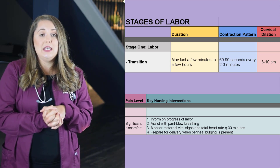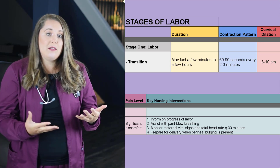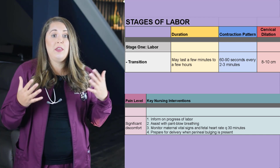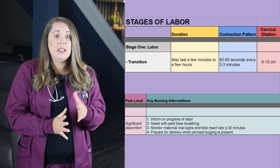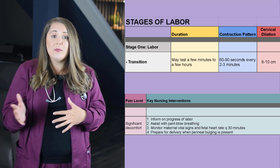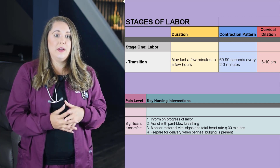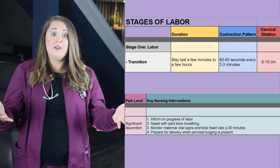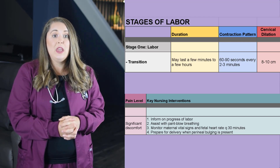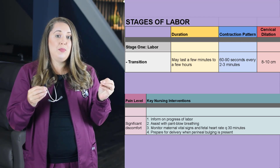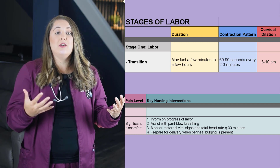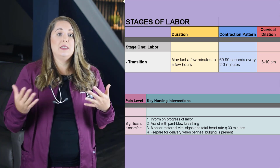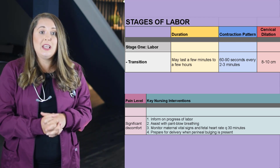Nursing responsibilities during the transition phase include informing the patient on the progress of her labor to help with anxiety. Assist patients with pant-blow breathing. Monitor vital signs and fetal heart rate every 30 minutes to one hour, or per the doctor's order. Contraction monitoring is also continued. When perineal bulging is noticeable, start prepping for delivery — the head is coming down through the vaginal canal. Check that room temperature is between 77 and 80 degrees Fahrenheit and free from drafts. Notify staff, prepare necessary supplies and equipment including the resuscitation machine, and perform hand washing and double gloving.